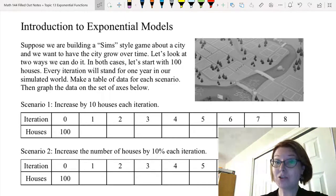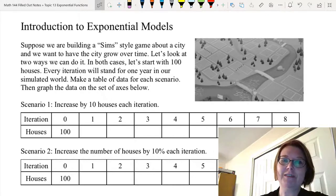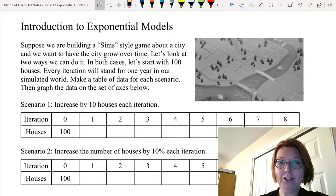Let's look at two ways we can do it. In both cases we're going to start with 100 houses and every iteration of the game will stand for like a year in our simulated world. We're going to make a table of data for two scenarios and then graph that on a set of axes.